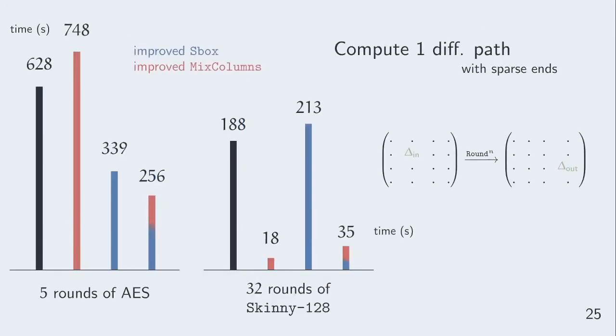We have just seen until now results about number of inequalities, but what we are really interested in are computation times. We benchmarked our techniques by computing differential paths for five-round AES and 32-round Skinny. We see that for the AES, the S-box improvement has more impact. For Skinny, the linear layer improvement is much more interesting.